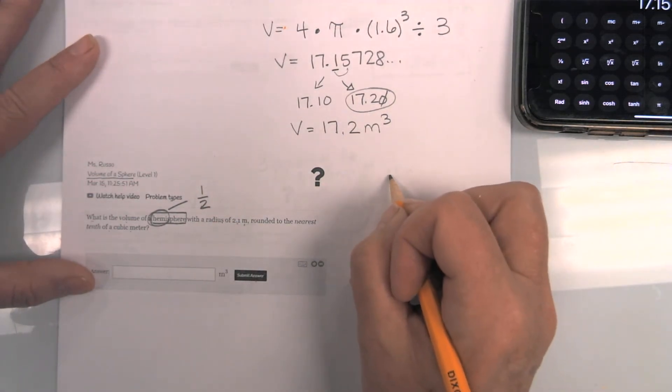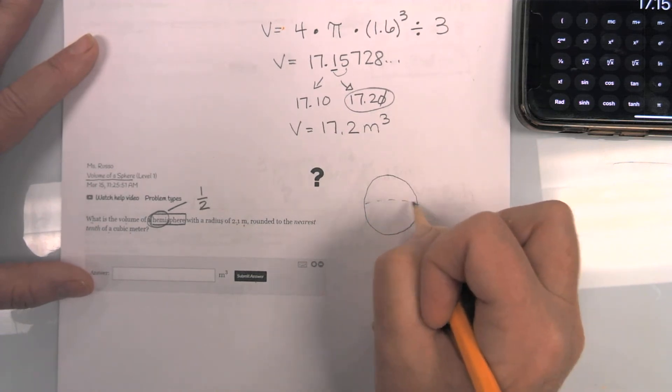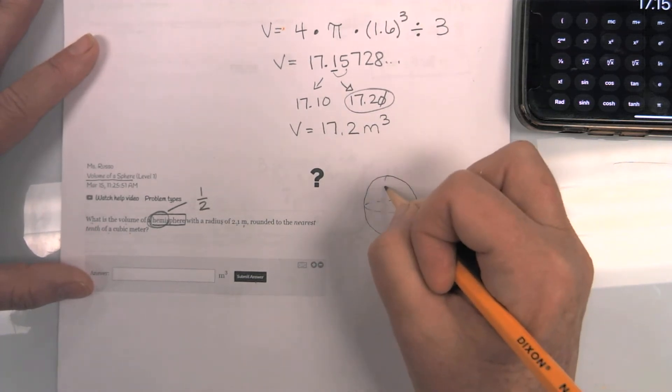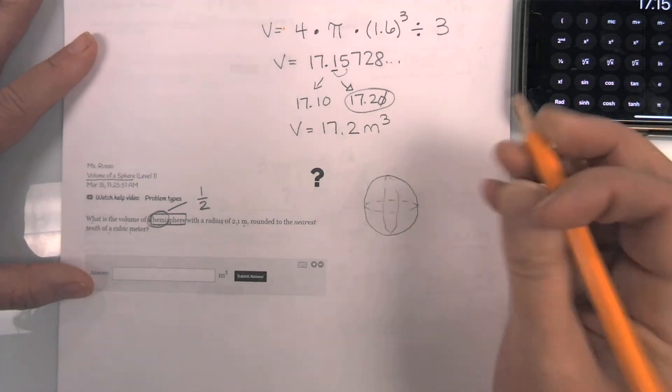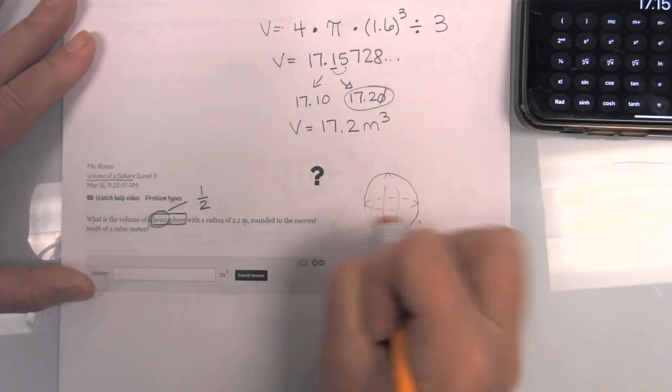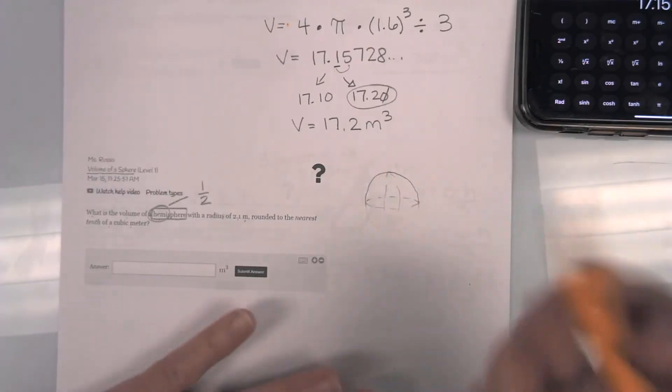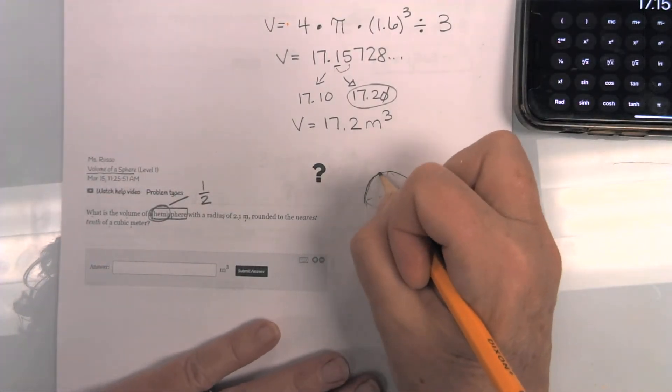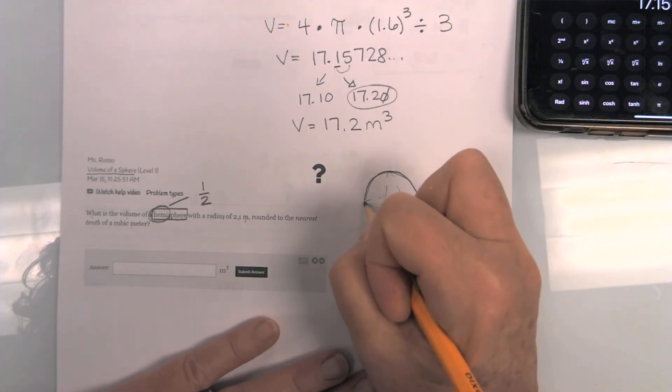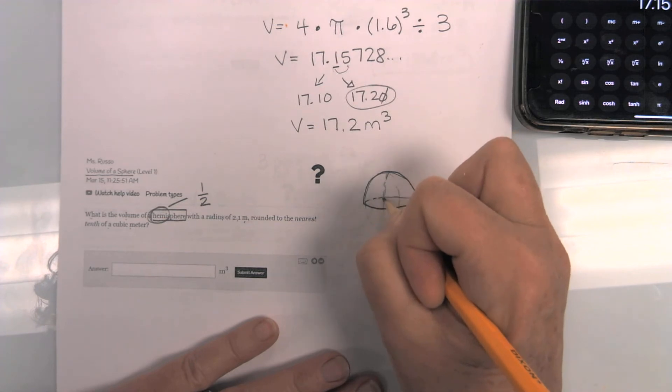So when they are asking for a hemisphere, I'm going to sketch the whole thing. Here is a sphere, right? Here's our sphere, but they actually only want half of it. So I'm going to kind of erase that. But how would we find, okay, so now I'm going to sketch this in darker. They want to know a hemisphere.